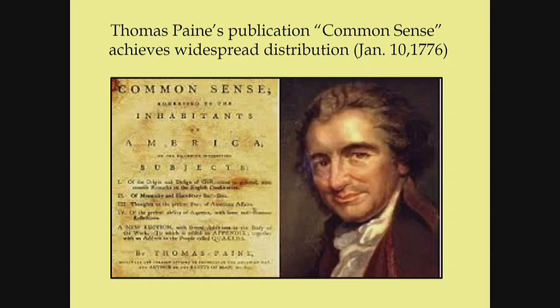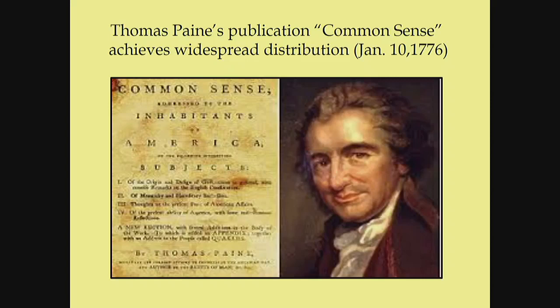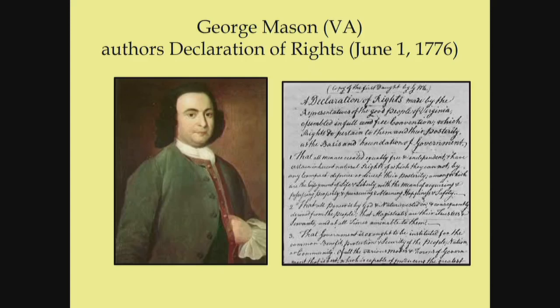The Declaration of Independence says that all men are created equal — we acknowledge that today. However, not everyone was included in 'all men are created equal.' Native Americans weren't factored in to have any rights; they were considered savages. Colonial women were also denied these natural rights — they didn't get the vote until the suffrage movement in 1919. And although slavery existed in all the colonies, Southern plantations in particular were worried about slave uprisings, and rights were denied to those individuals at that point in time.